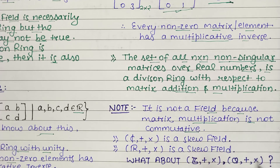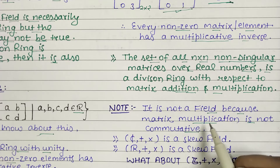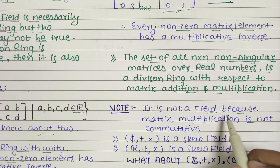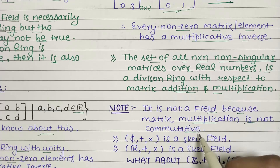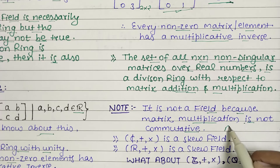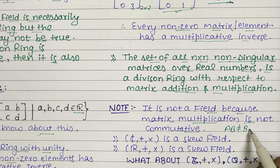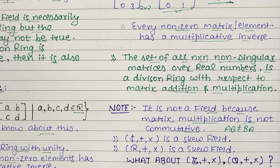Remember all the results from this video — they are most important. M₂(ℝ) is not a field because matrix multiplication is not commutative: AB does not equal BA in general.